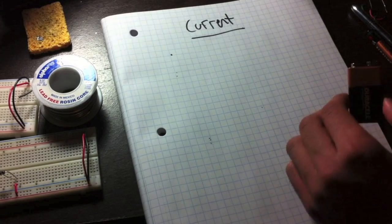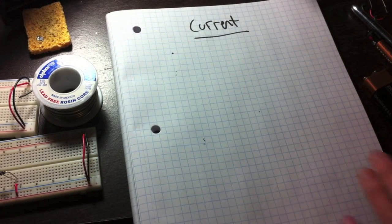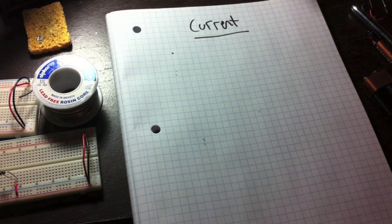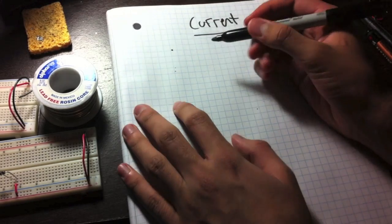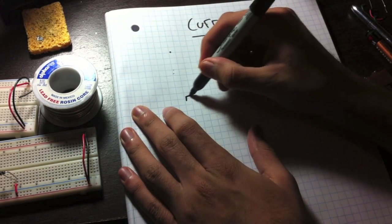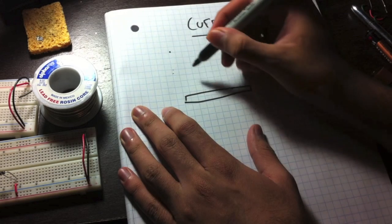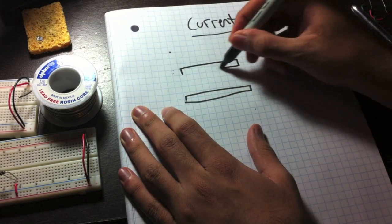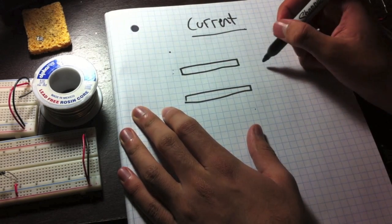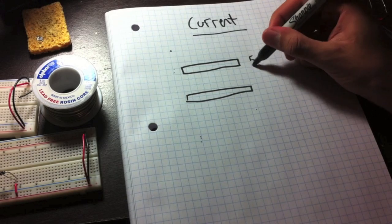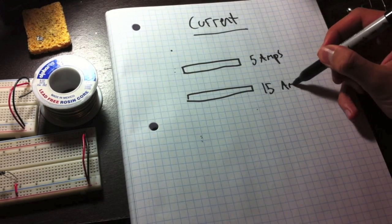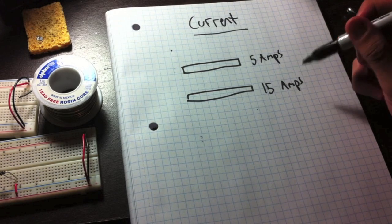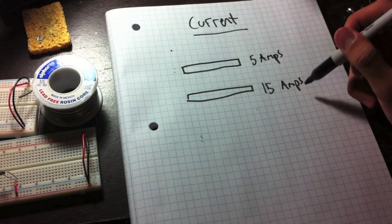Now if voltage is a pressure, current is the number of electrons. So if I had two wires, this wire had 5 amps going through it and this guy had like 15 amps going through it. Obviously this has more current and this has more electrons.